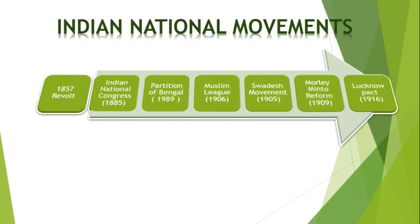The first one is the 1857 Revolt. The British rule in India was strongest between 1858 and 1905. The 1857 revolt was called a 'Sepoy Mutiny' by the British, and by Indian historians it was called the first war of Indian independence. The revolt was unsuccessful, but it began the effort to eliminate foreign powers in India. Although the British successfully suppressed the 1857 revolt, they couldn't stop the formation and growth of political awareness in India.